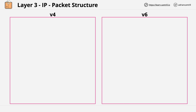An IP packet contains various different fields, much like frames that we discussed in an earlier video. At this level, there are a few important things within an IP packet which you need to understand, and some which are less important.